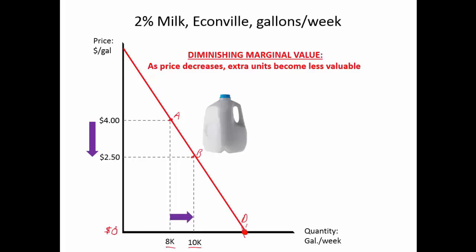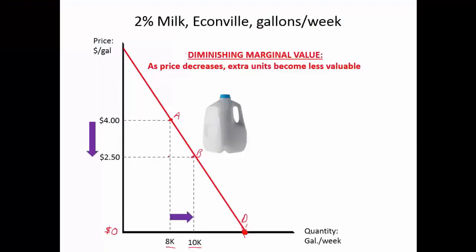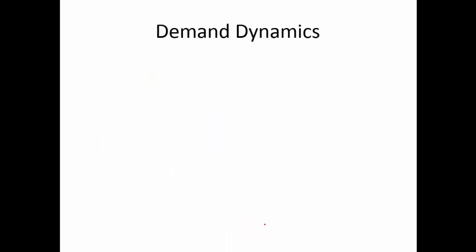Nobody wants to drink 20 glasses of milk a day. As price goes down, quantity increases, but only to a point. Extra units become less and less valuable. So there's a demand curve and the law of demand.